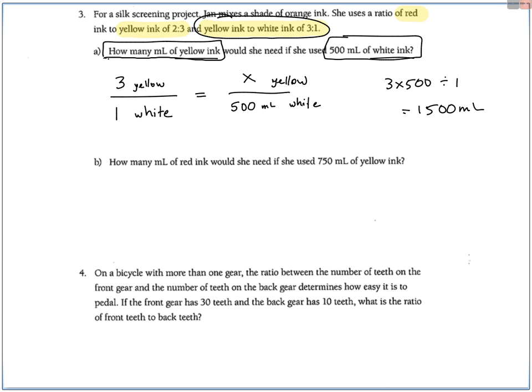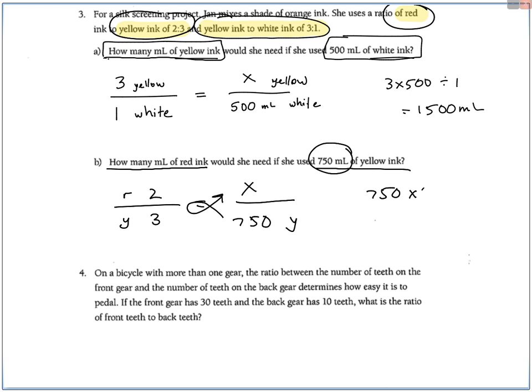The next question asks you to do how many milliliters of red if you use 750 milliliters of yellow. The ratio of red to yellow is 2 to 3. So red is 2, yellow is 3. They gave us 750 yellow. It goes in the bottom, yellow is in the bottom, red is in the top. Cross-multiply on that. 750 times 2, dividing 3. Looks like 500 milliliters of red you would need.